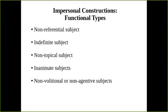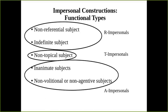In that same volume on impersonal constructions, there were five proposed functional types: non-referential subject constructions, indefinite subject constructions, non-topical subject constructions, inanimate subject constructions, and non-volitional or non-agentive subject constructions. Although it is conceded that there is oftentimes overlap between these functional types, they are further generalized into three broad categories: R impersonals, which include non-referential and indefinite subject constructions; T impersonals, which consist of non-topical subject constructions; and A impersonals, which consist of inanimate and non-volitional subject constructions.